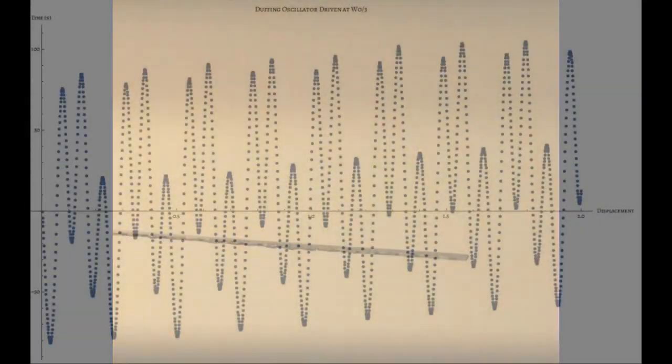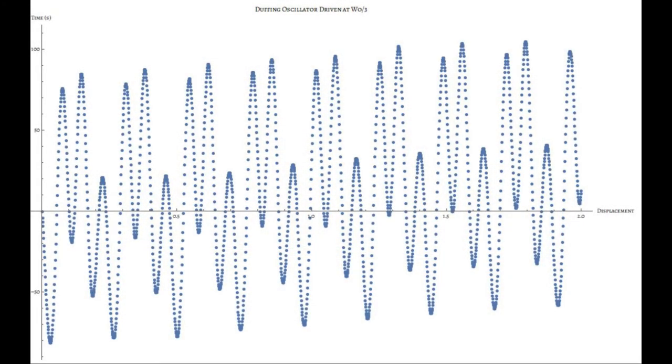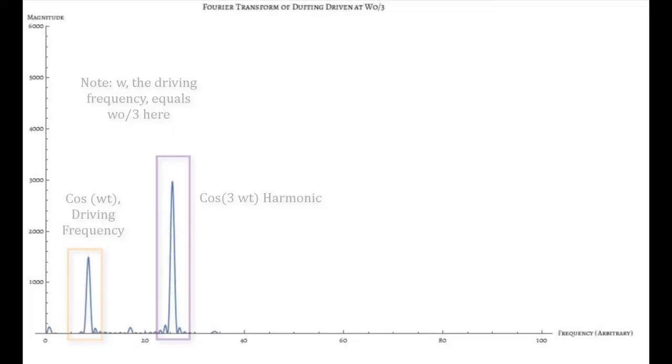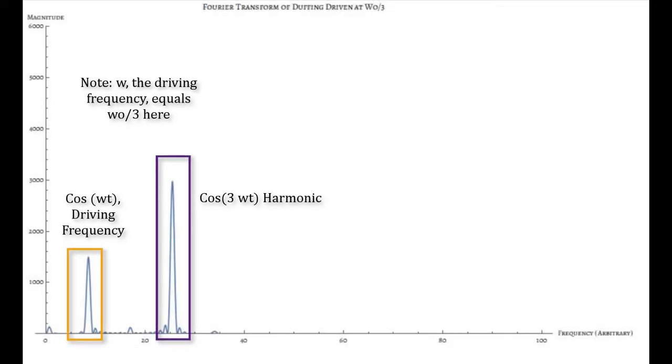For these results, we have let all transients die off. Plotting the displacement of the system confirms this. Additionally, looking at a Fourier transform of the data, we see the strong presence of the cosine of 3 omega t harmonic. These results confirm the predicted presence of harmonics in the system.